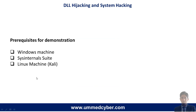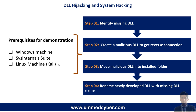These are the prerequisites for the demonstration. We require one Windows machine, Sysinternals Suite, and a Linux machine to get the reverse connection at the time of malicious DLL injection. We will perform this operation in four steps: first, identify the missing DLL; then create a malicious DLL to get a reverse connection; then copy this malicious DLL into the installed folder; and finally rename the newly developed DLL with the missing DLL name and execute the software normally.